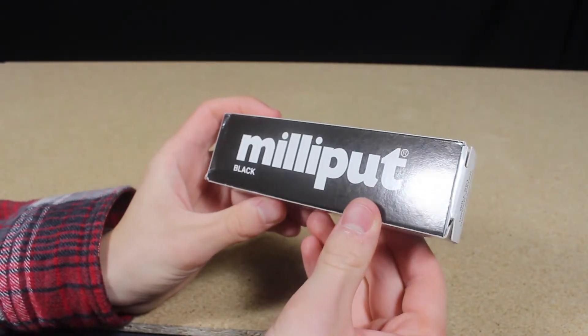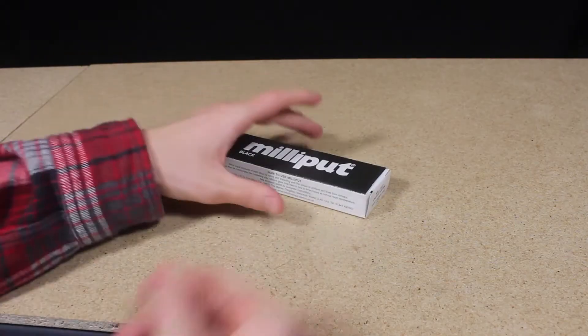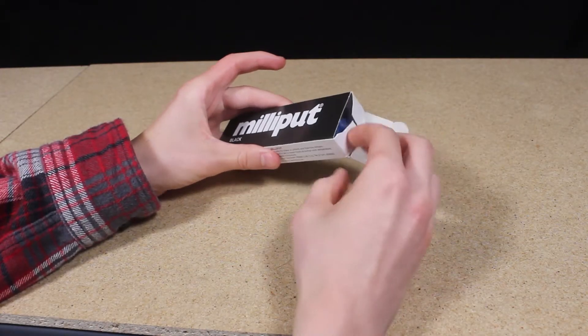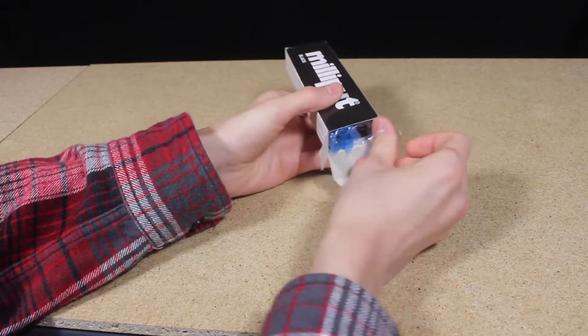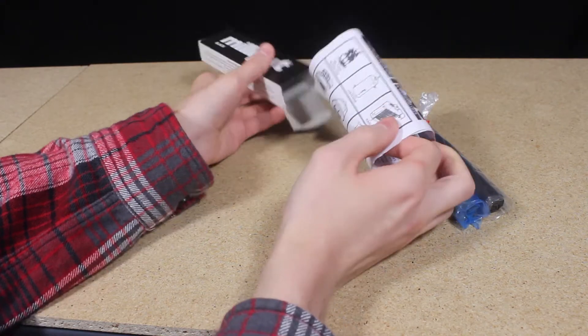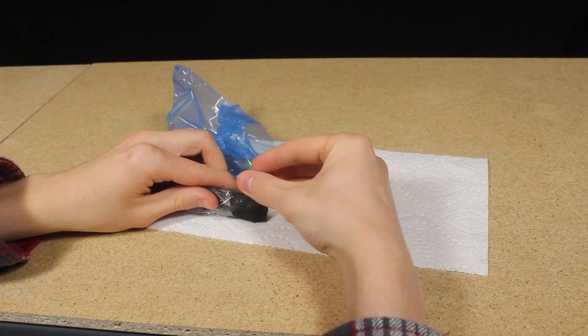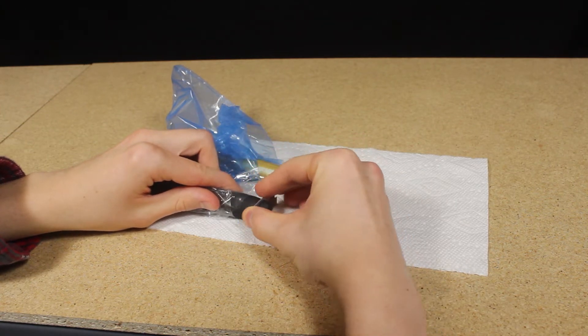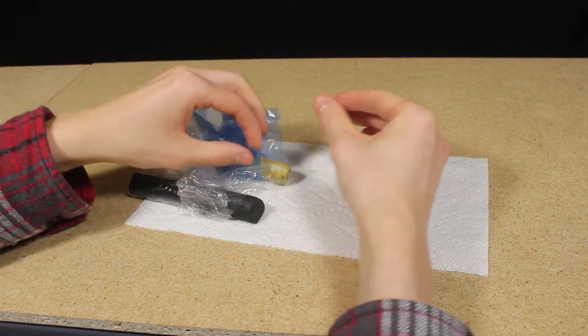Once the surface is dry, I can add the Millie Putt. If you aren't familiar with Millie Putt, it's a multi-purpose two-part epoxy putty that can be used for a wide variety of applications including model making. Millie Putt comes in a variety of different types and colors designed for specific applications, but the application process is pretty much the same for all types. I'm using Millie Putt black for this part. If you want more information about Millie Putt, I've included a link below in the description.